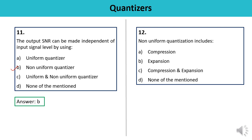Question 12: Non-uniform quantization includes — compression, expansion, both compression and expansion, or none of the above? Compression and expansion together give the feature of non-uniform quantization — it is the combination of both. The answer is C.